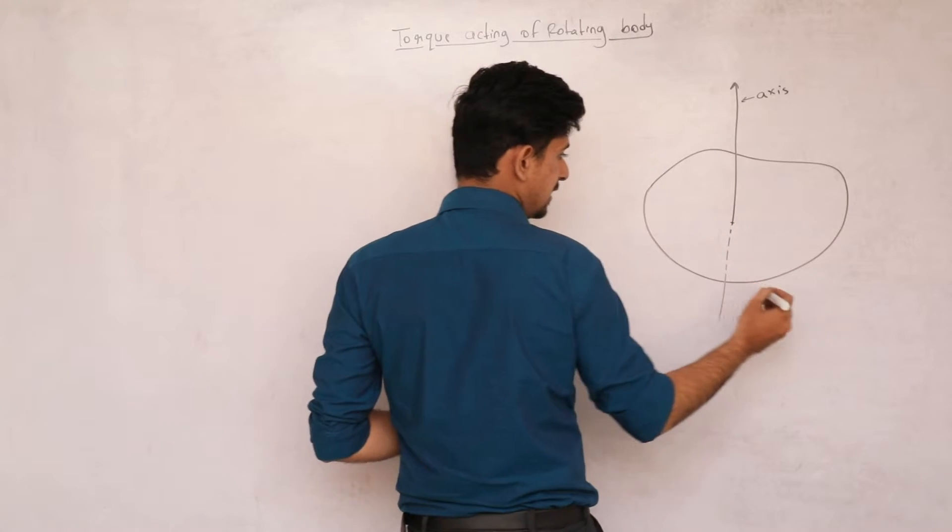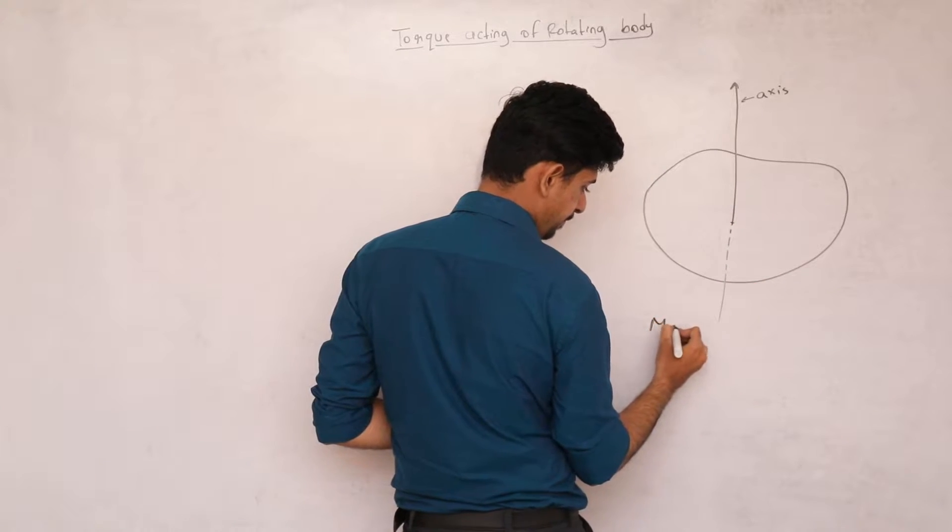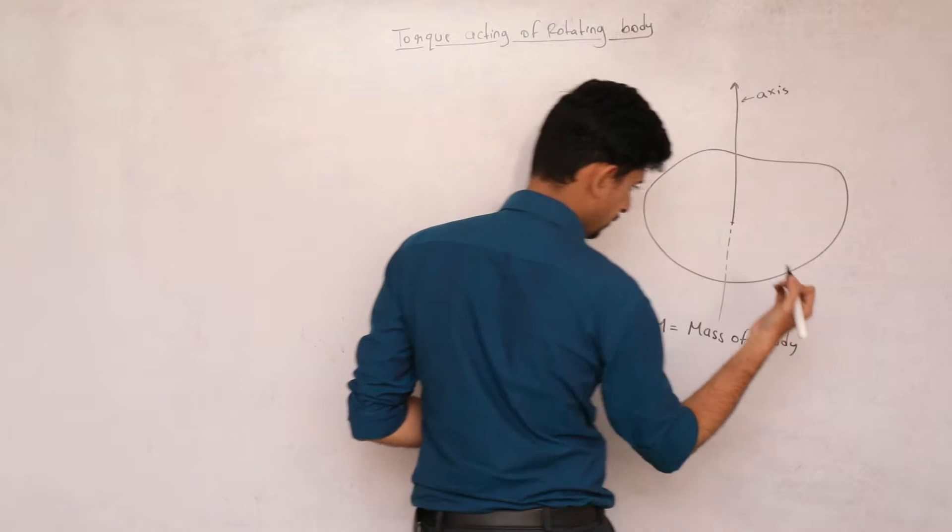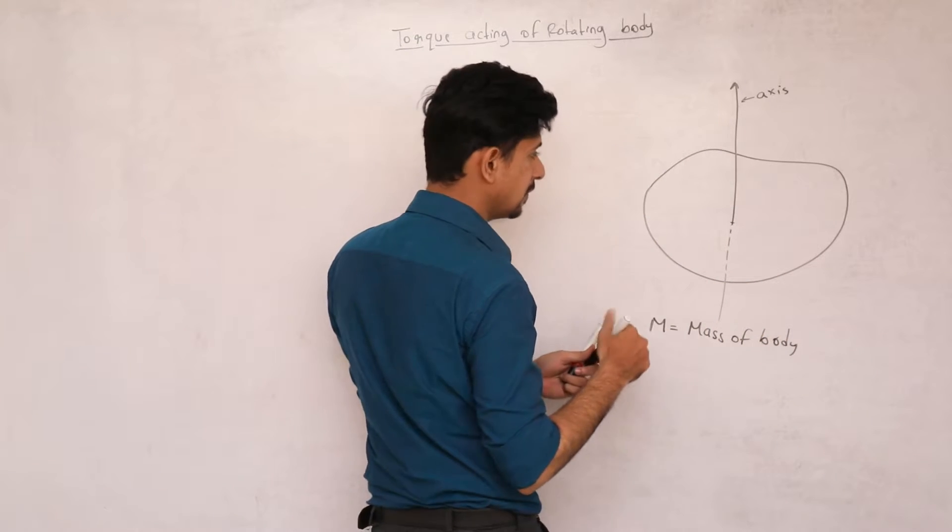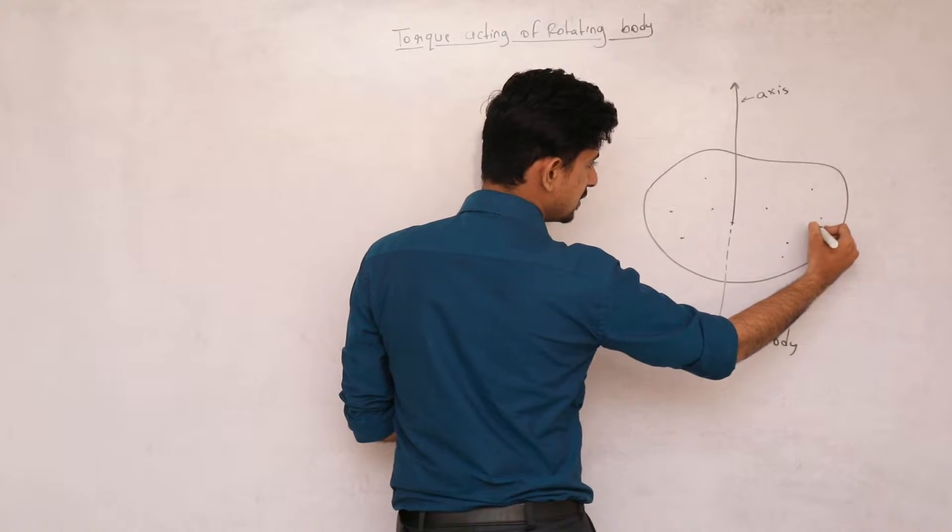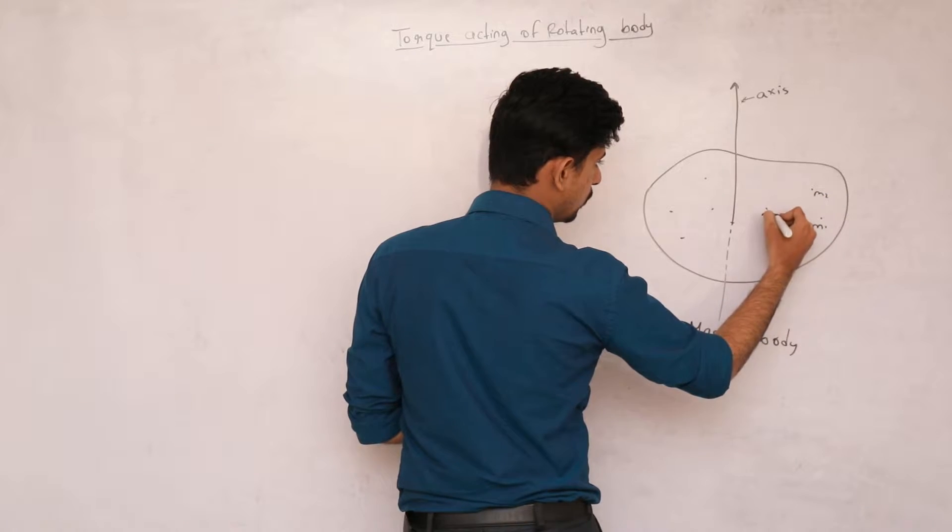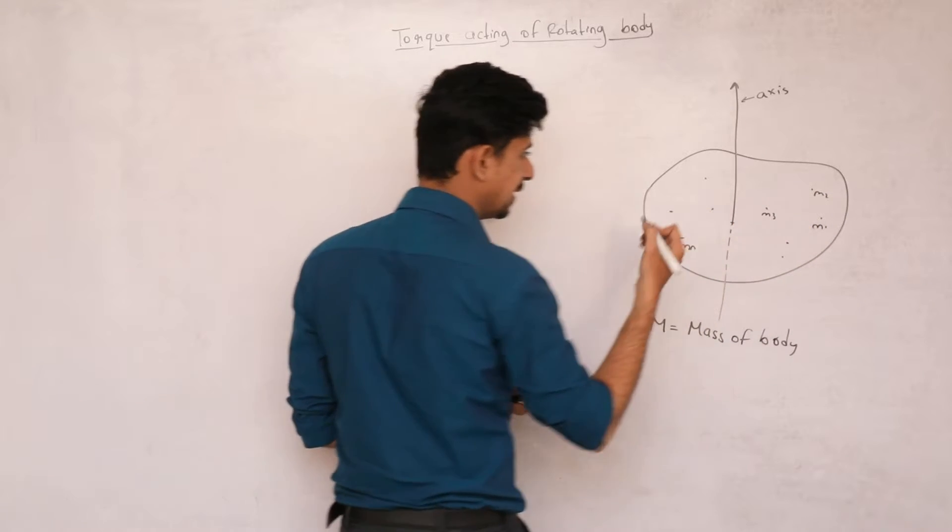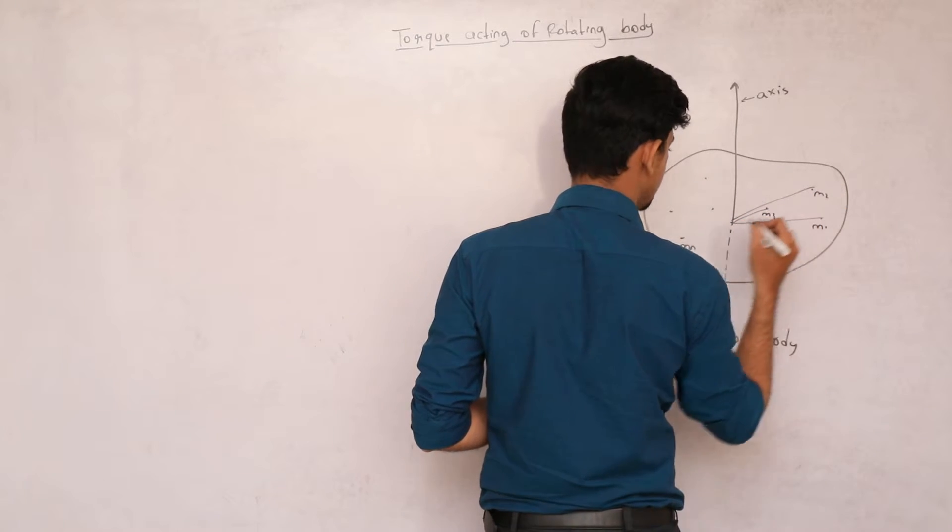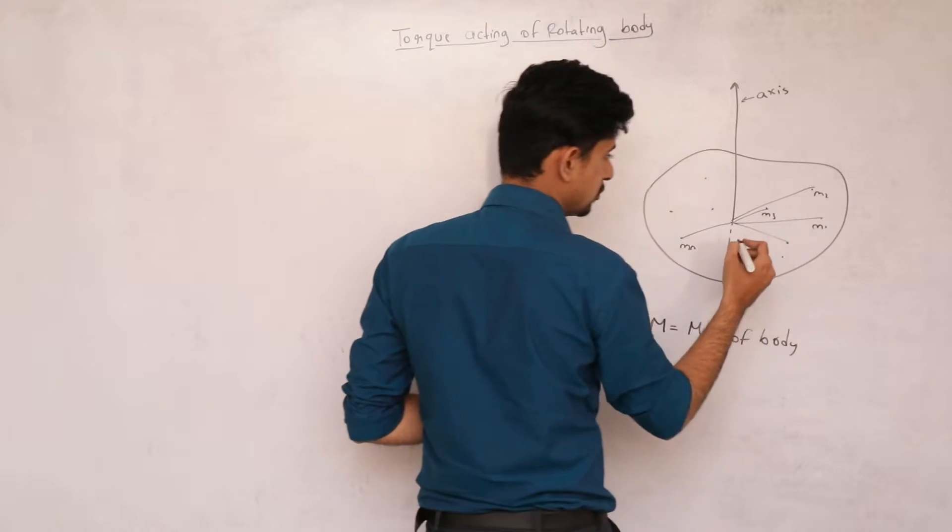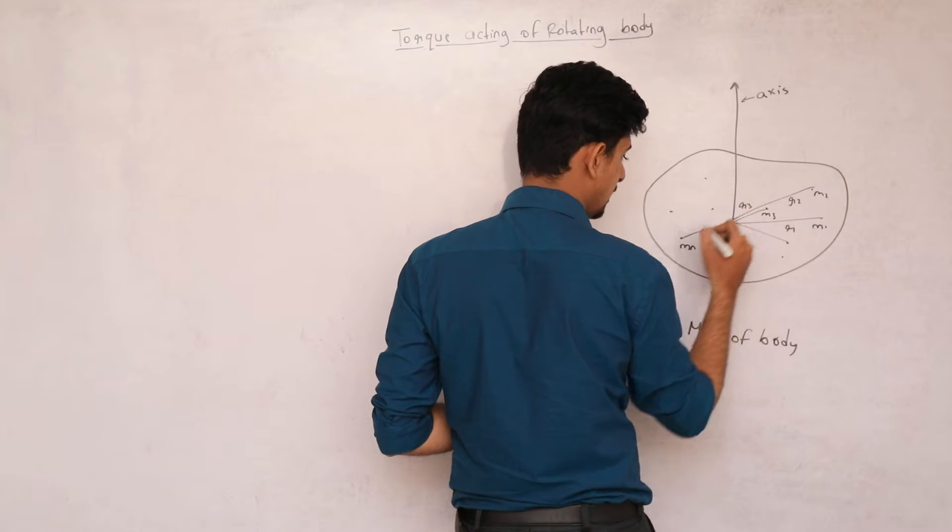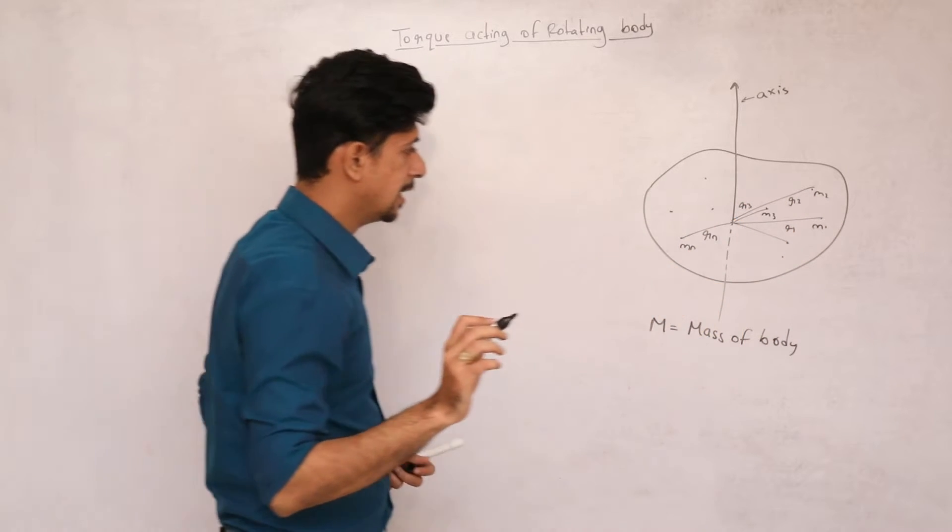Let's say capital M is the mass of the body. Now we have a lot of particles - individual masses M1, M2, M3, up to the last particle Mn. To get the perpendicular distance from the axis, we go perpendicular to get individual radius, so we have r1, r2, r3, up to rn and so on.